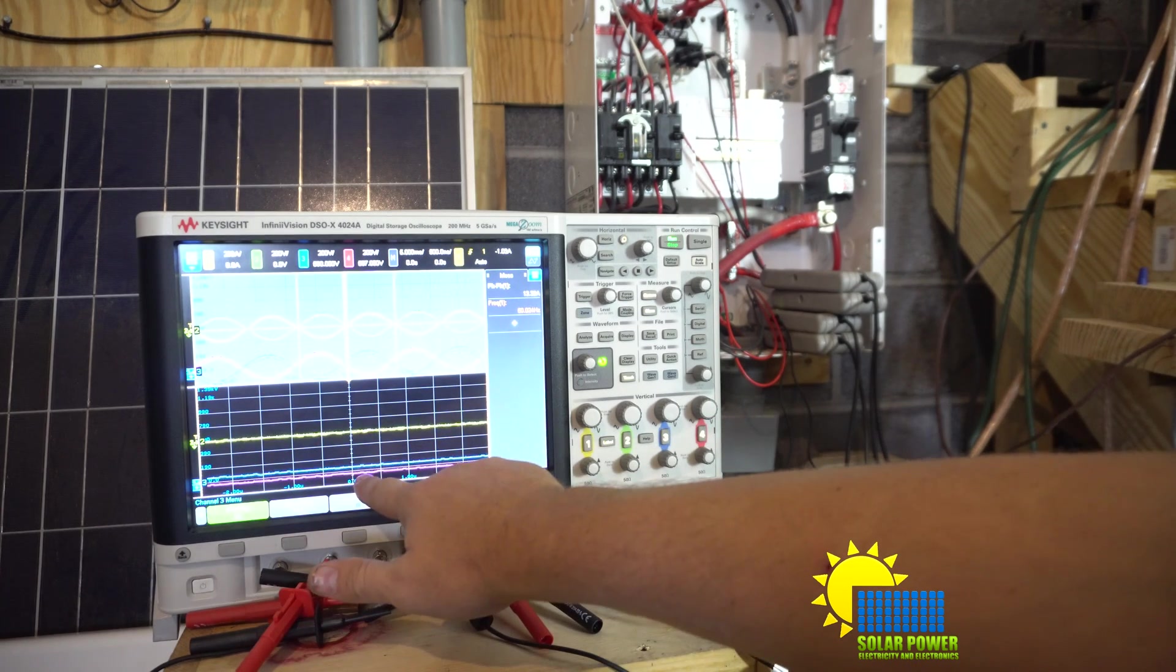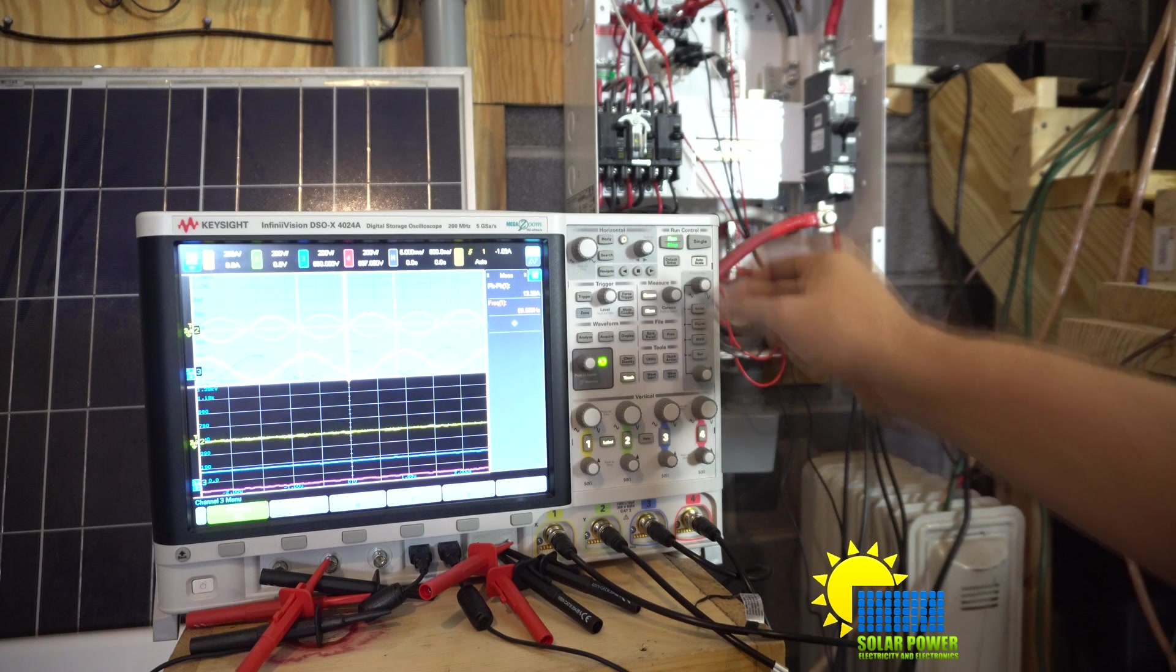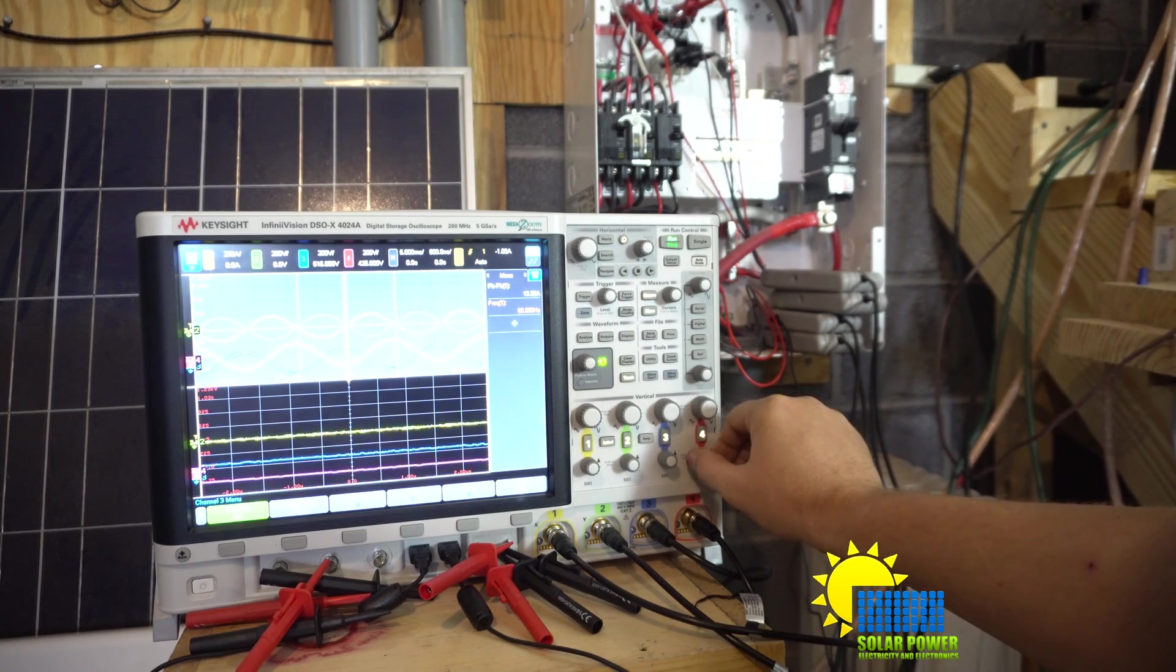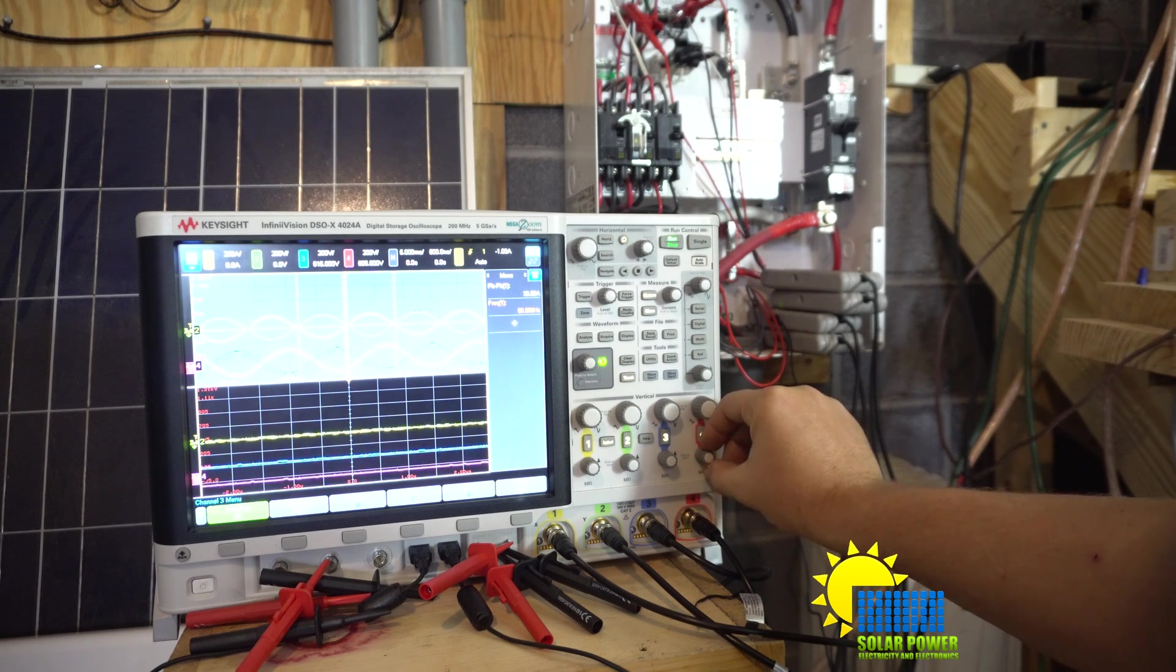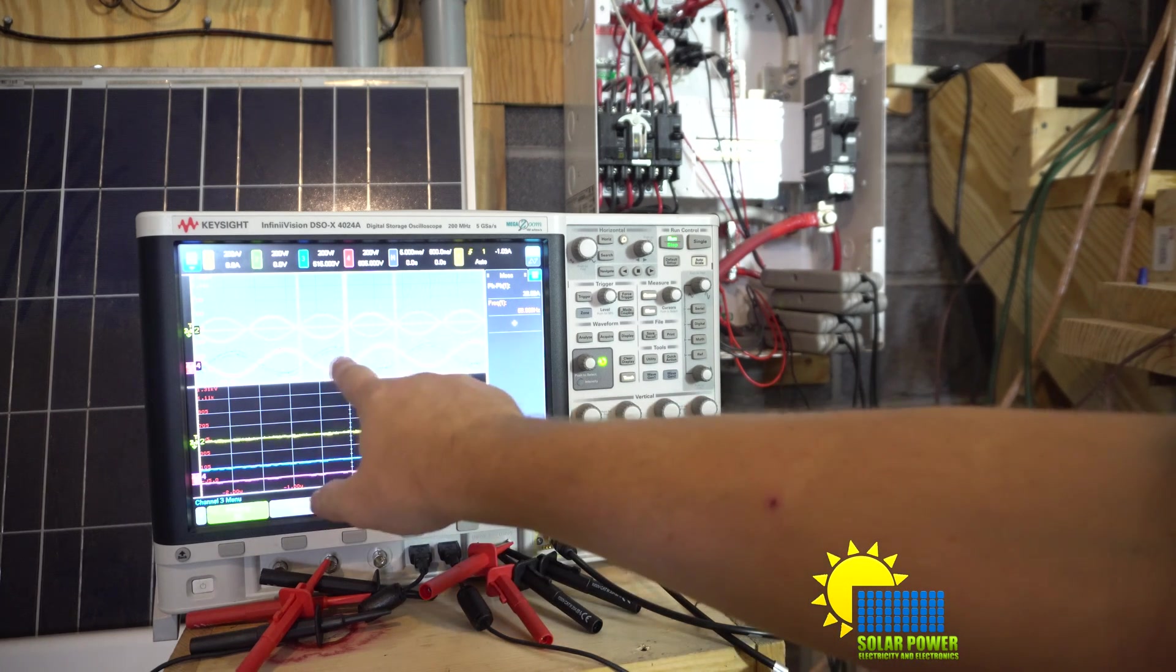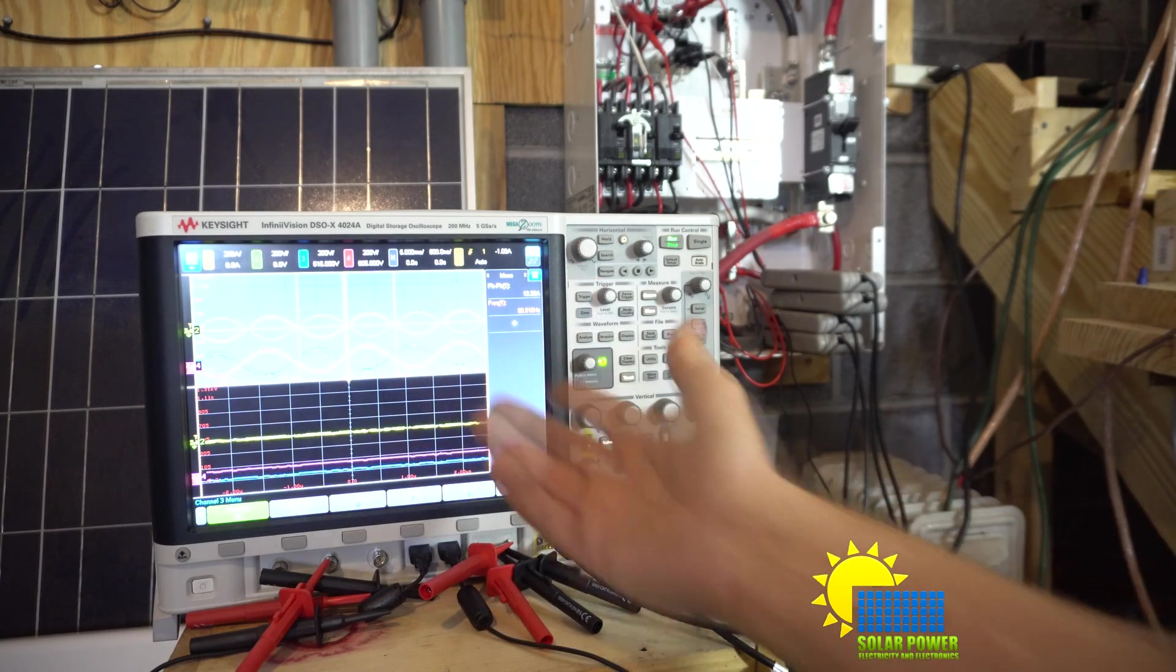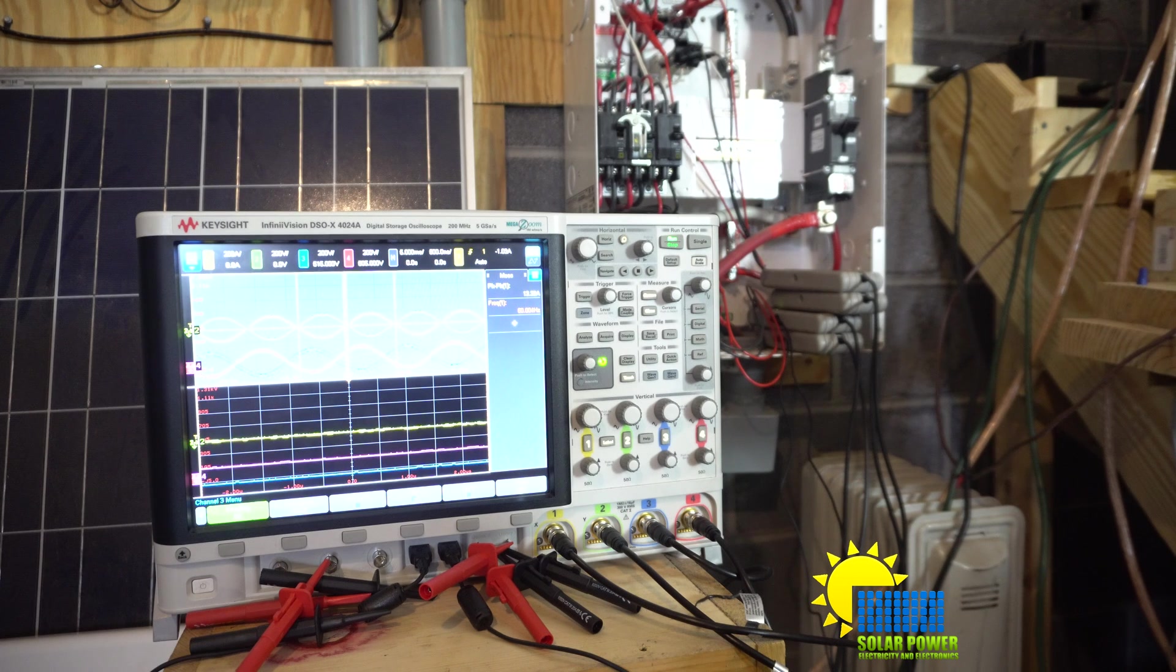You can see these two are the grid power and the Magnum frequency. You can see how the voltage drops to zero and then it's rising again. This isn't real time, in real time it's doing this 60 times a second.